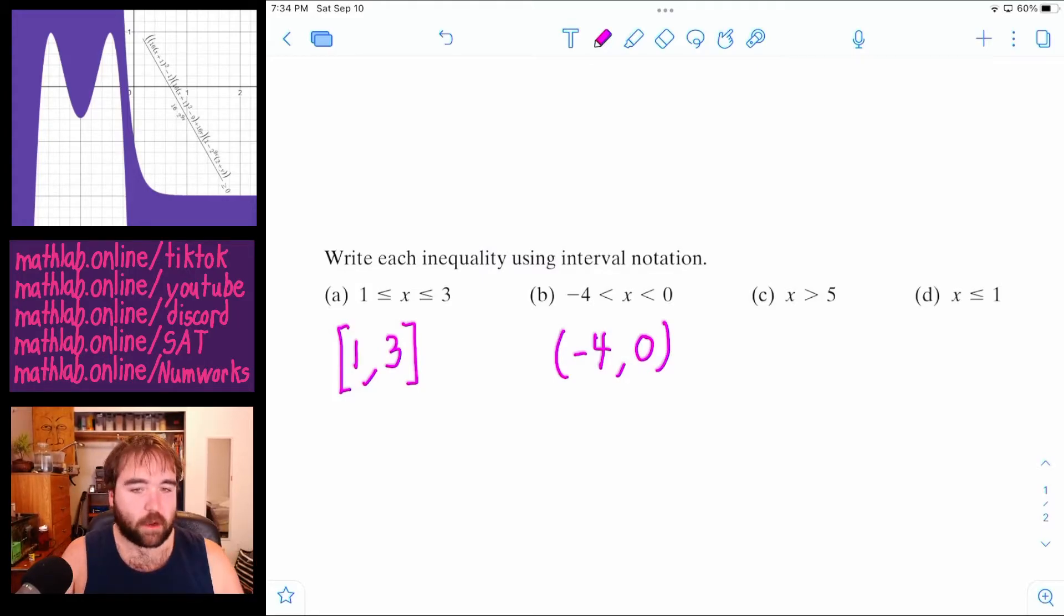So anything from negative four to zero, but not specifically negative four and zero. And the parentheses show that.